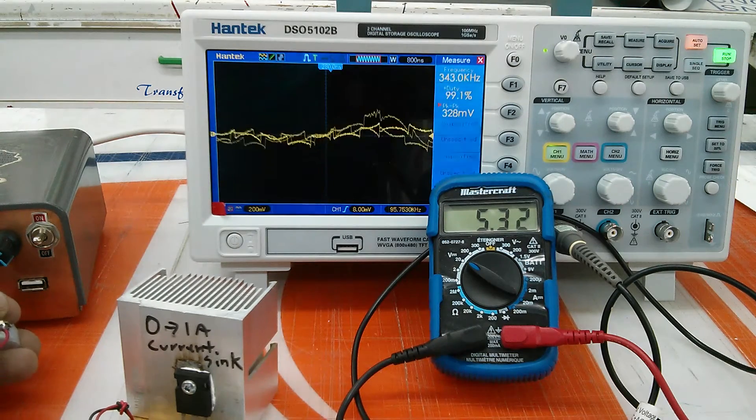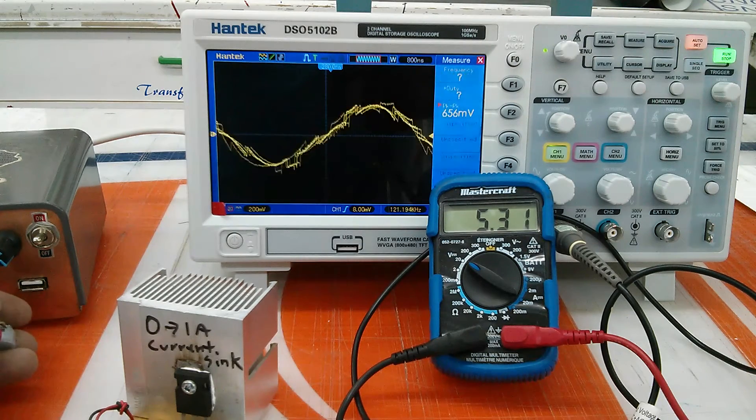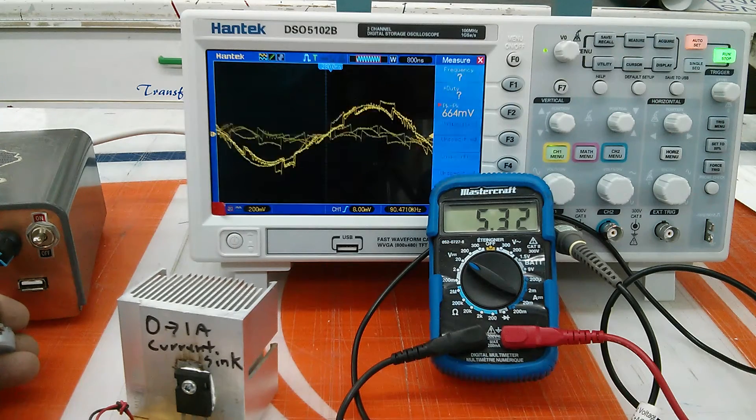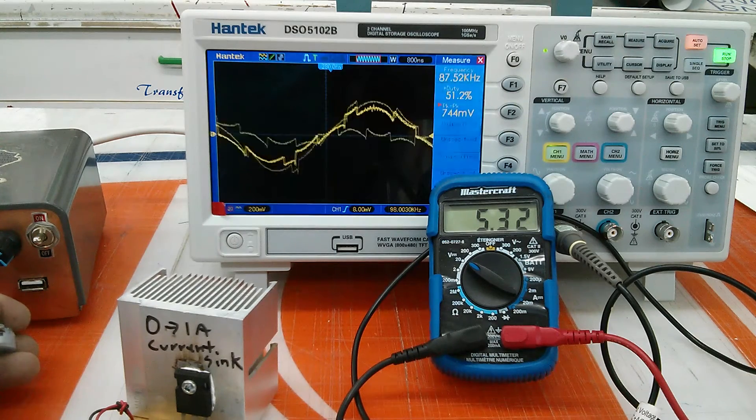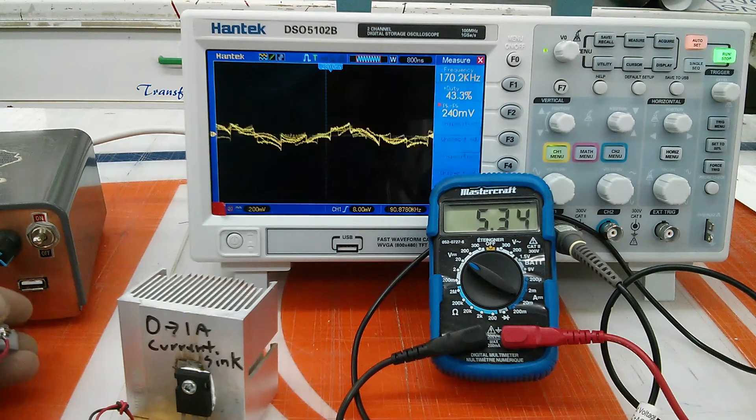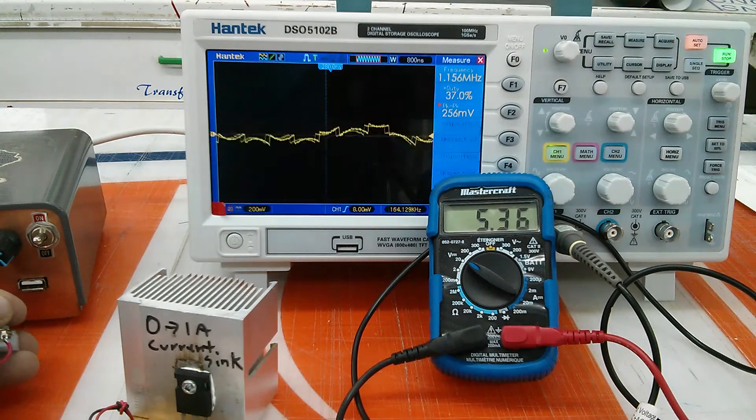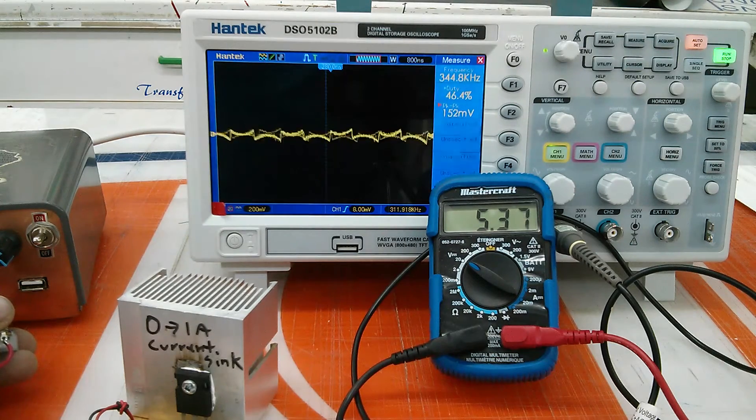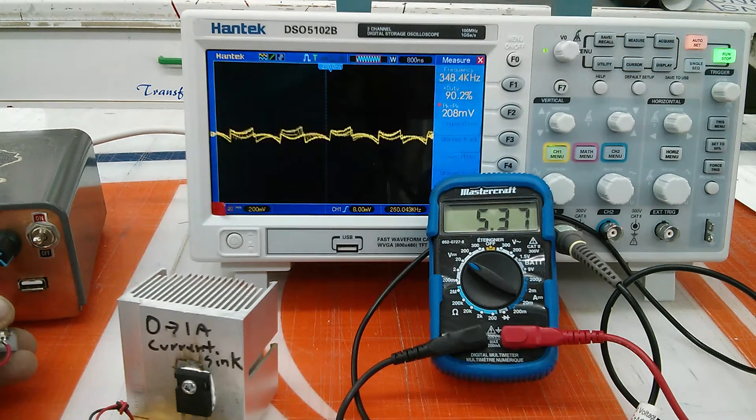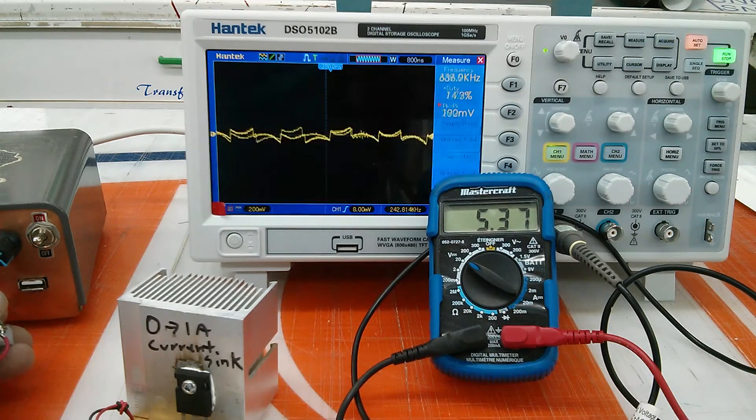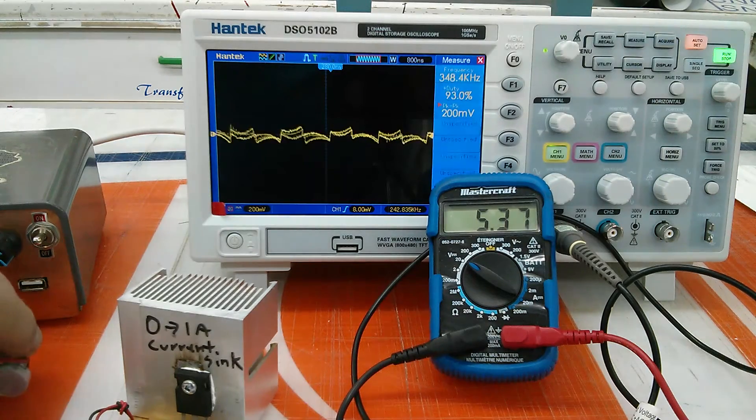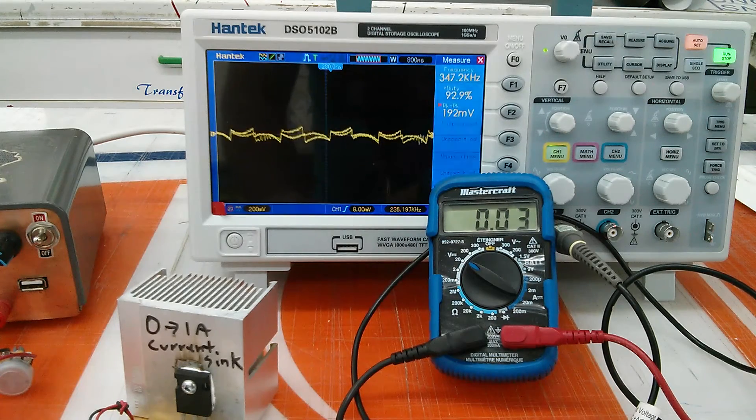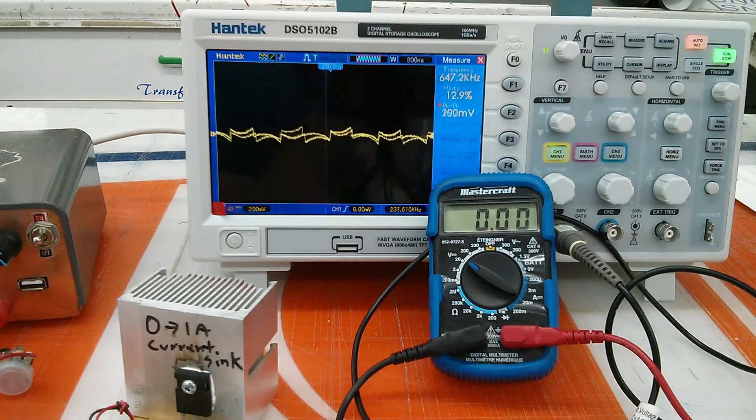The multimeter is reading fairly steady though, which is interesting. Usually you get it reading a bit lower, but it hasn't dropped much. That would definitely suffice to charge your phone up. I'll just set her back down to where it's starting to get more jittery on the output. I'll quickly check what the current is.